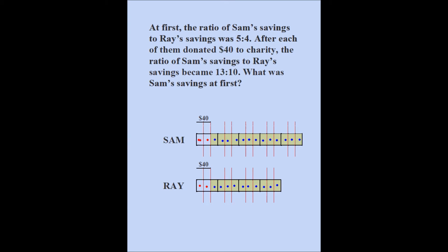If these 2 parts together represent $40, each part must represent $20. Originally Sam had 15 parts, and each part is worth $20, so Sam's original savings must be 15 times $20, which equals $300. That's the answer. That's the visual explanation to this problem — we're going to go ahead and look at the algebraic one.